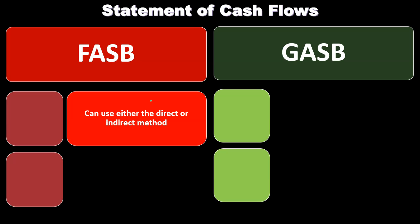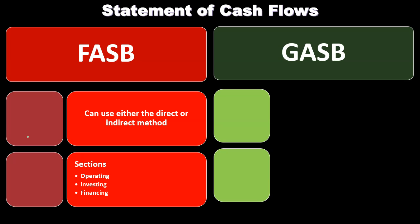Starting with FASB, non-governmental can use either the direct method or indirect method. When we think about the statement of cash flows, the operating section can be created using either of those methods. There are sometimes restrictions as to which one needs to be used, but here under FASB we can use either the direct or the indirect method.